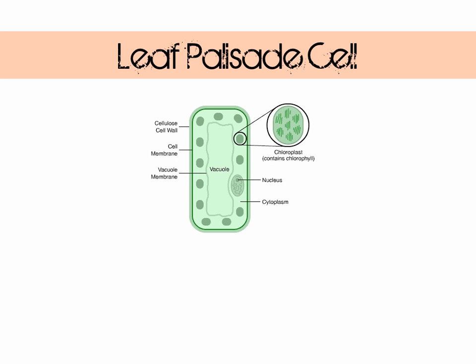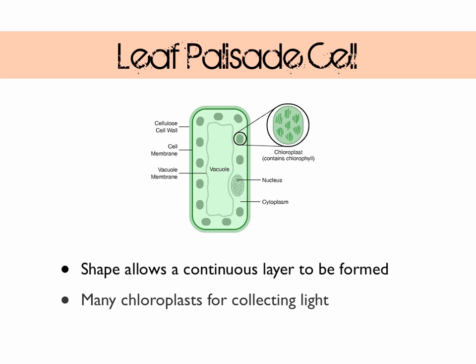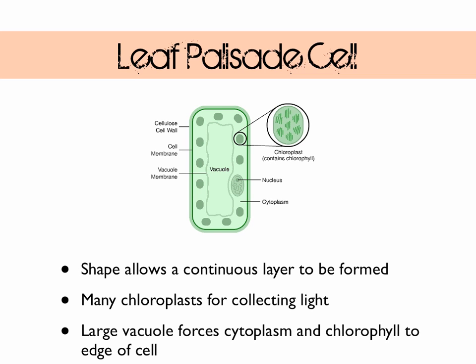Here's our typical plant cell — this is a leaf palisade cell. It has a nice rectangular shape which allows many of these cells to line up and form a continuous layer. We've also got plenty of chloroplasts to harvest as much light as possible, and a large central vacuole that forces the cytoplasm and all of its contents up against the cell membrane and the cell wall.